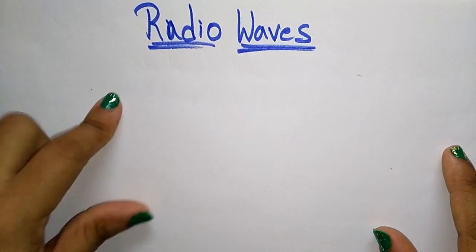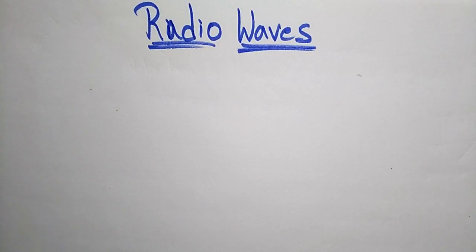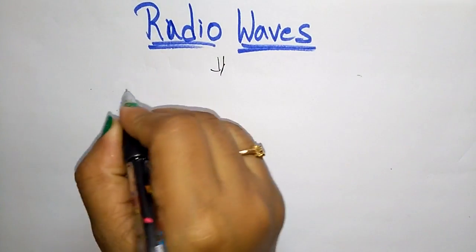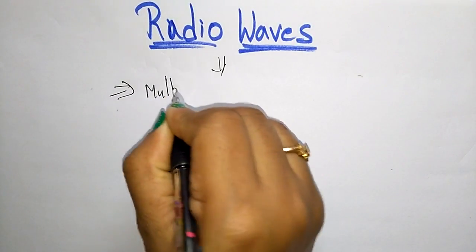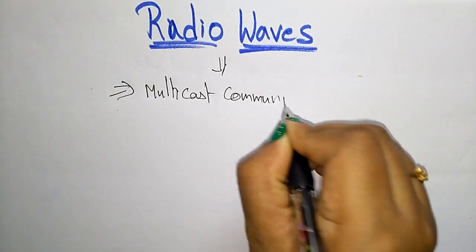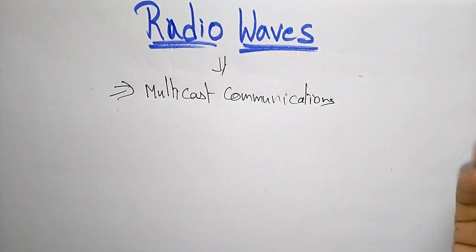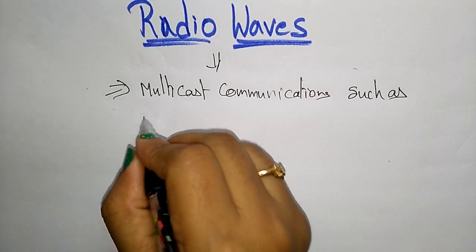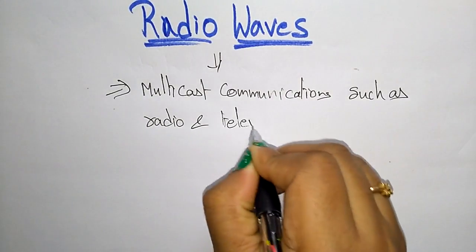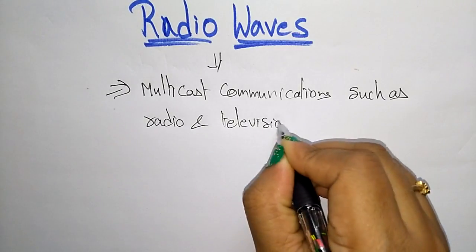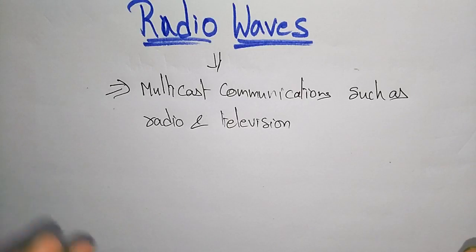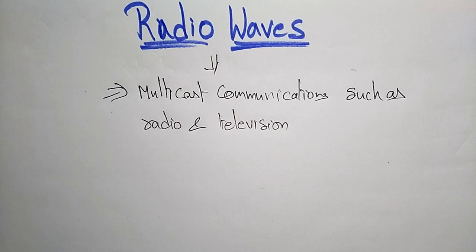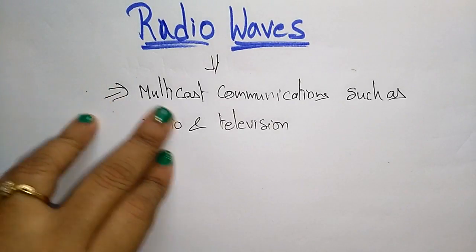The first type is radio waves. Radio waves are used for multicast communications, such as radio and television. All the radio signals and television signals you receive are with the help of radio waves, so radio waves support multicasting communication — signals come in different ways and are received by multiple parties.